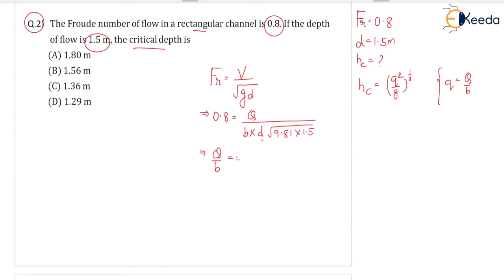We can substitute this value here in this equation: 4.6032 whole square by g that is 9.81, to the power of 1 by 3.